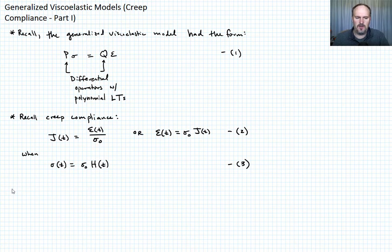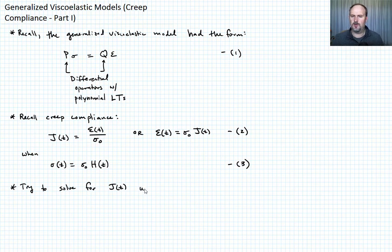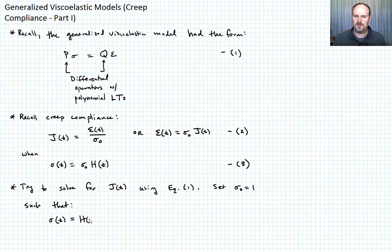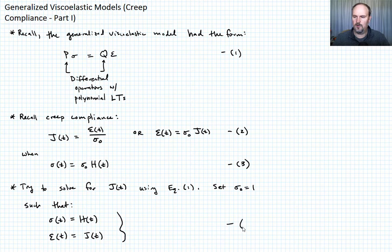Now let's go ahead and try to solve for J of T using equation one. We're going to set sigma naught equal to one such that sigma of T is just equal to the Heaviside function H of T, and epsilon of T — since sigma naught is just one — is the creep compliance J of T. We'll collectively call those equation four.